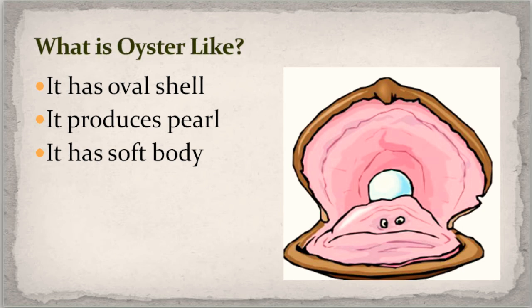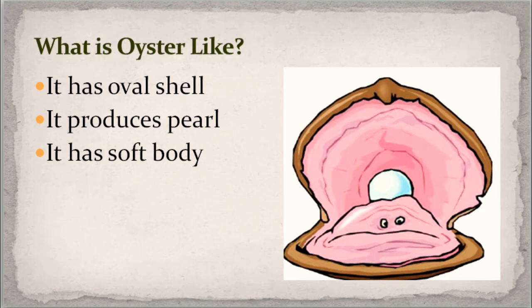First, oyster. What is oyster like? It has an oval shell. It produces pearl — pearl adalah mutiara. Shell, cangkang. And it has a soft body — memiliki tubuh yang lunak.